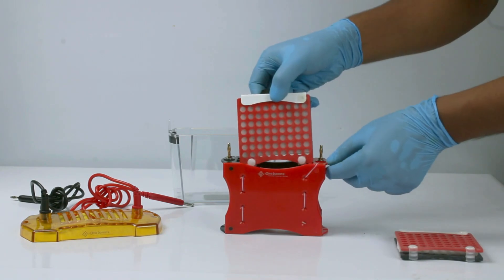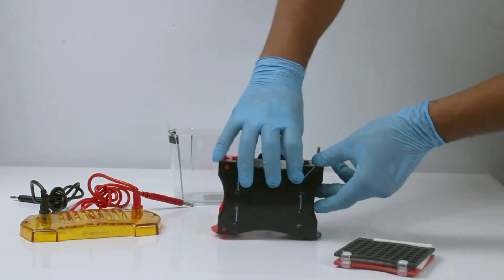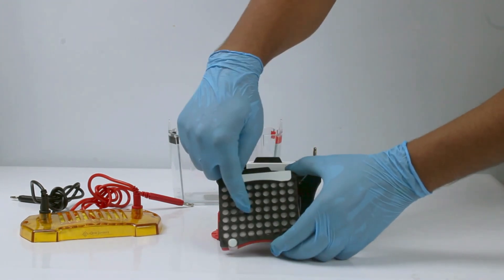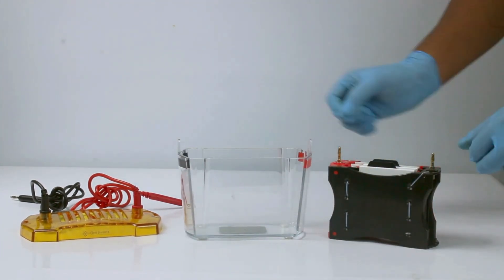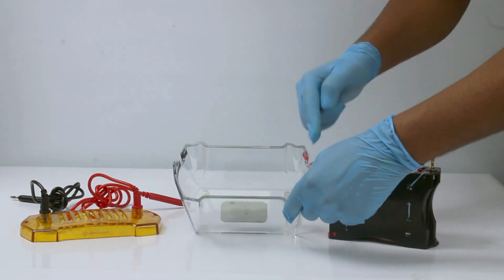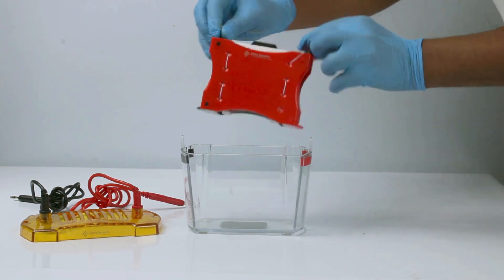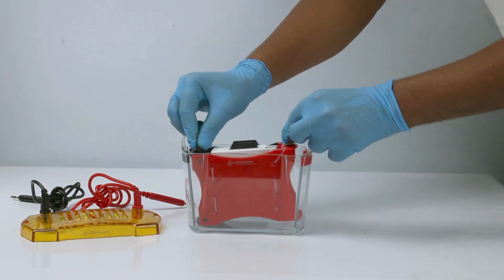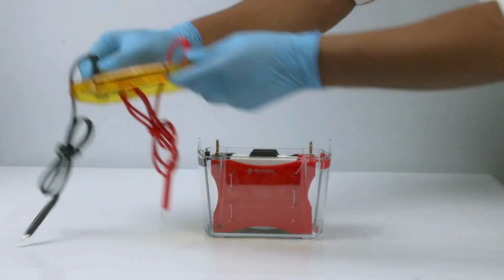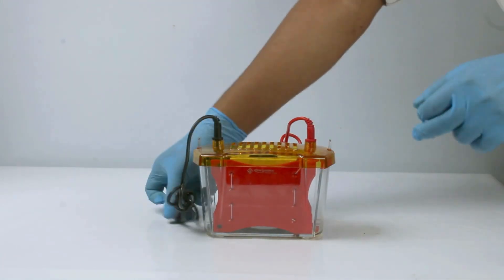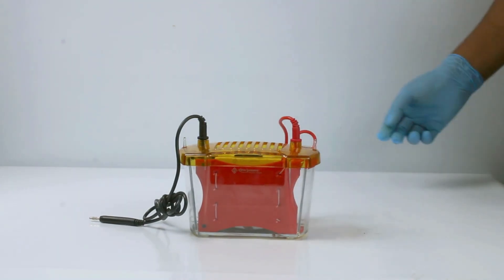Place the transfer clip into the transfer blot module, ensuring that the red side of the clip aligns with the red side of the module. When the whole transfer blot assembly is completed, take the buffer tank and place the transfer module inside the buffer tank, aligning red for positive and black for negative. Connect it with the power supply to start the transfer.